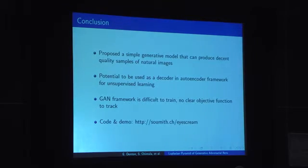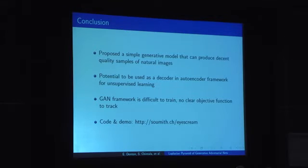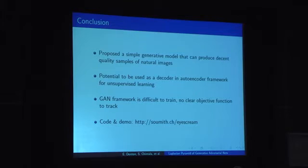To summarize, we have proposed a very simple model that is able to exploit our domain knowledge of images. There are a variety of ways this model could be used — for example, it could be used as a decoder in an autoencoding framework for unsupervised learning. There is a lot of future work to be done to make these models more stable and easier to train. If you want to look at our code, try it out, or see some more examples, you can go to the website shown here.